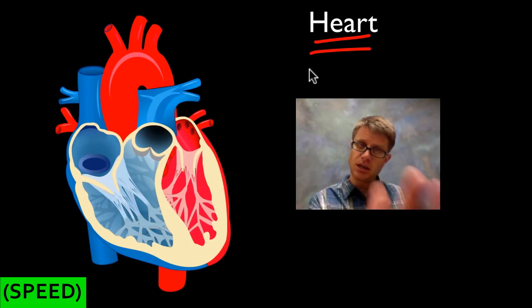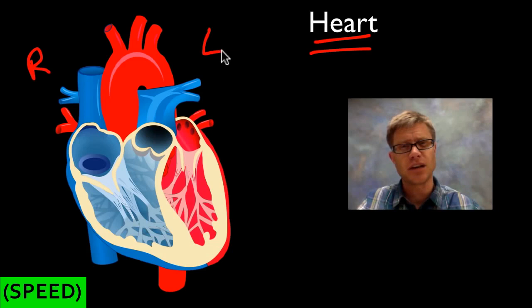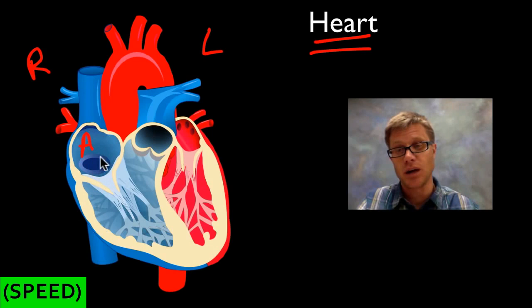Let's start with the heart. When you see a diagram like this, imagine yourself shifted inside the heart — your right side is over here and your left side is over here. Starting with deoxygenated blood: it's coming back from your body through the superior and inferior vena cava, entering into what's called your right atrium.